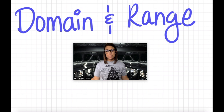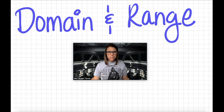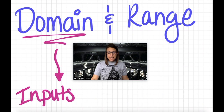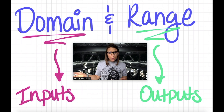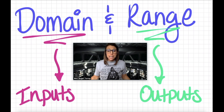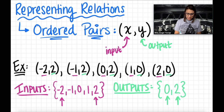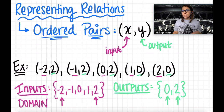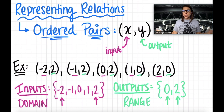The final part of this video is going back and describing each relation's domain and range. Here's the cool part — you've actually already done it. The domain of a relation is simply its set of inputs, and the range is its set of outputs. If you look back at all our examples, we already have this — we were just calling them inputs and outputs instead of domain and range. Going back to example one with our ordered pairs: the domain is negative 2, negative 1, 0, 1, and 2, and the range is 0 and 2.